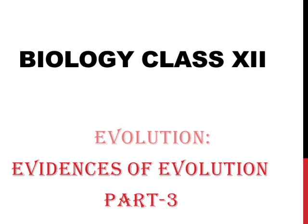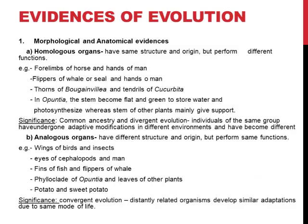Let us start with evidences of evolution. What do these evidences actually mean? These evidences are the proofs — they are the proofs that tell us that a particular pattern of evolution has taken place. So a particular pattern that has taken place during evolution is known as the evidences of evolution.